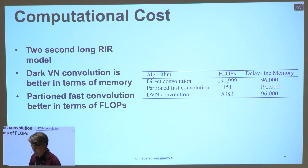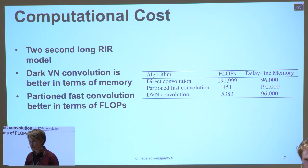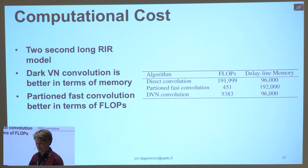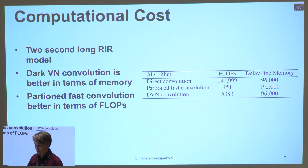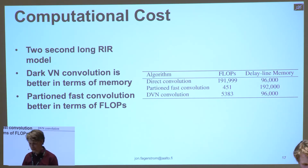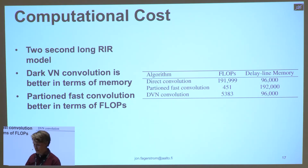Some details about the computational cost — this was a two-second long example, and the numbers are for that. In terms of memory, we are a bit better than the partial fast convolution, but still the partial fast convolution is very efficient in terms of floating-point operations.